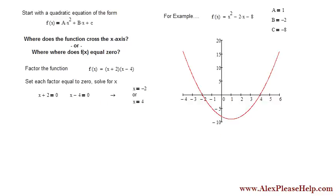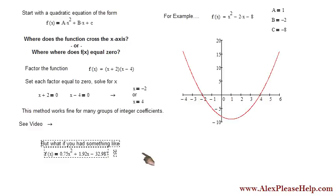This method works for many groups of integers, a, b, and c being integers. It works for many groups, and you can do it on paper real easily. But what if you have something that looks like this, where you have the coefficients are all funky decimals, 0.75x squared plus 1.92x minus 32.987, yeah, good luck with that.